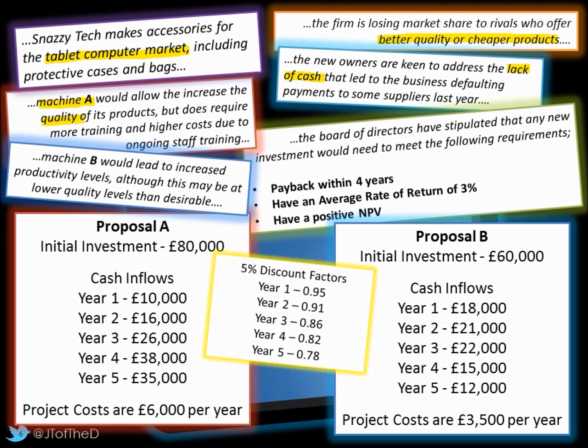Machine A and B, we've got our quality and productivity. Which option objectives-wise would we want to go with? The director's requirements are very important. Payback within four years, ARR of 3% and net present value being positive. You'll see that our machines don't necessarily always hit that. Certainly proposal B is far more consistent in terms of hitting those targets.